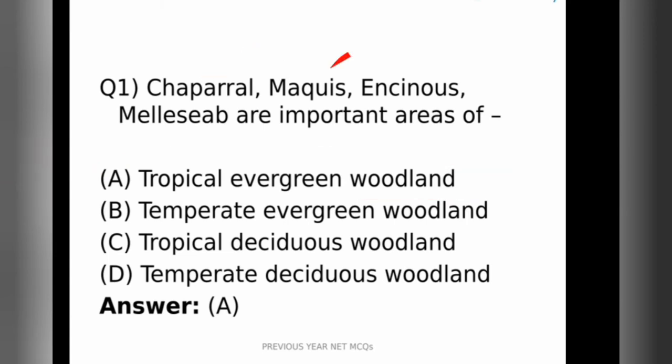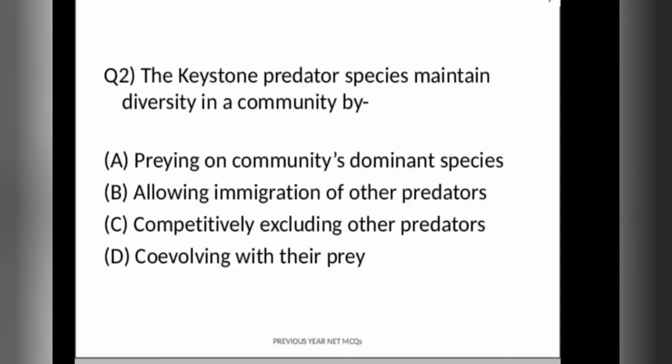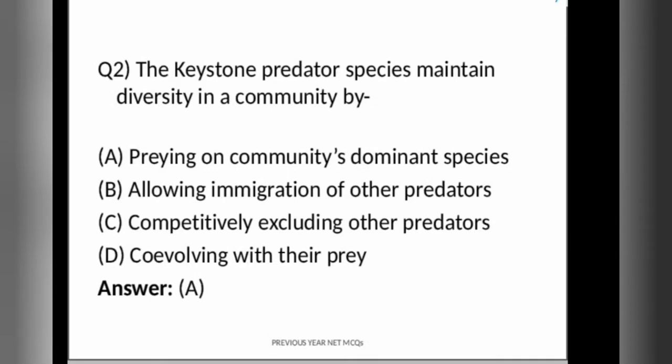So Chaparral, Maquis, Inquinos and Merisiv are the areas found in tropical evergreen woodland. Next question is: the keystone predator species maintains diversity in a community by which of the following act? The correct answer is option A. That is, the keystone predator preys on the community's dominant species and maintains the diversity in a community.